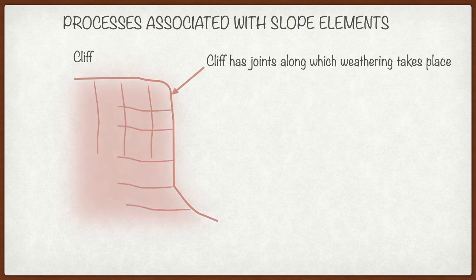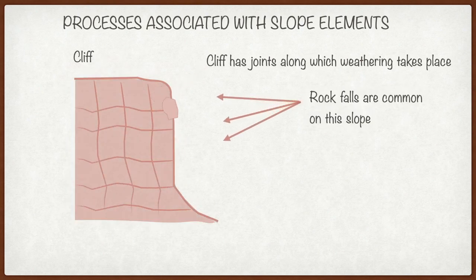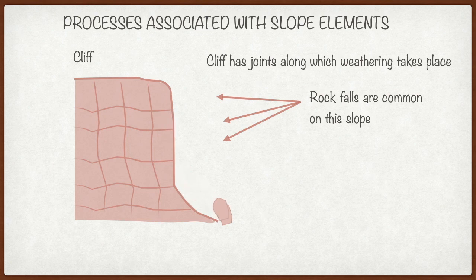The next feature we want to look at is what happens along the cliff face. Now when we look at the animation here, we see how the cliff face has got joints and it's along those joints that weathering takes place in the form of block disintegration.